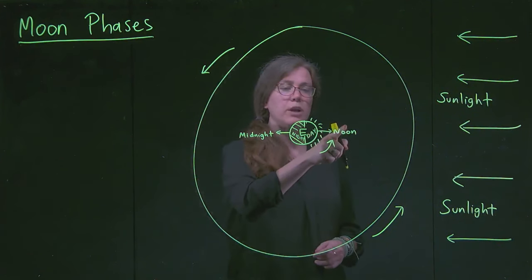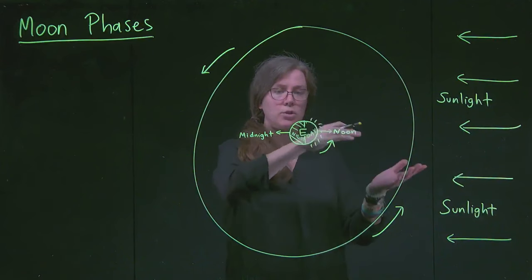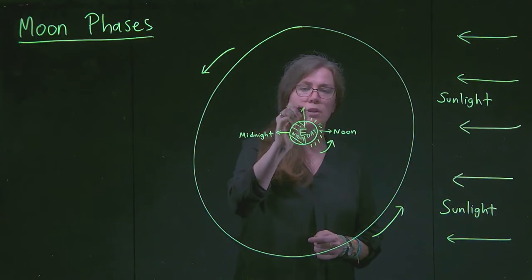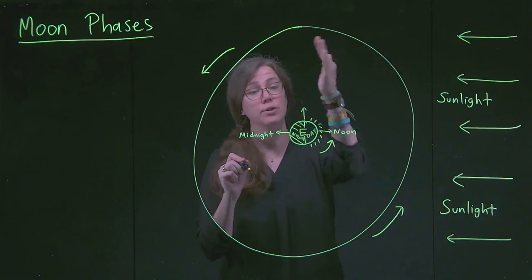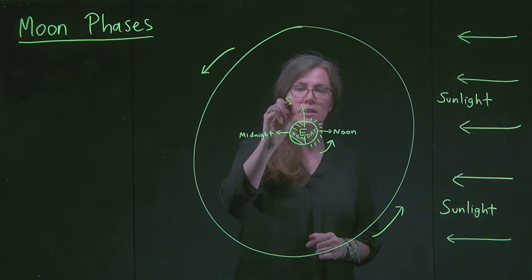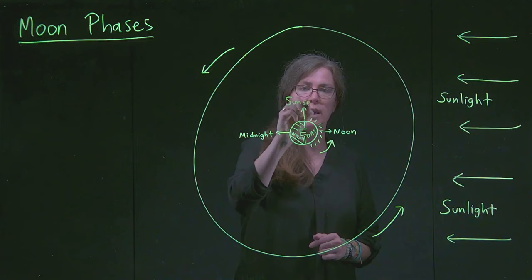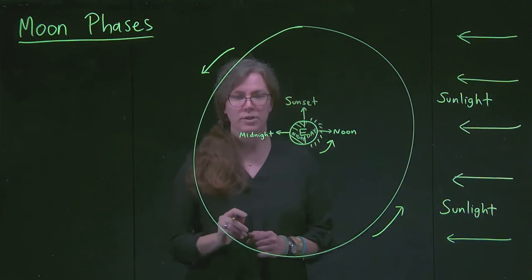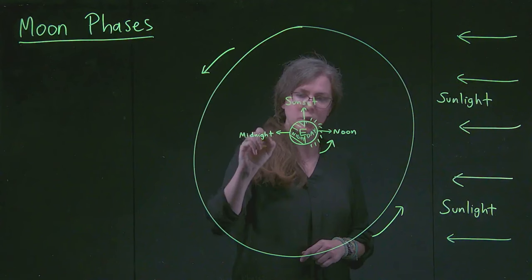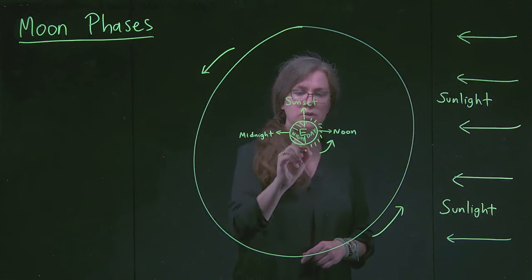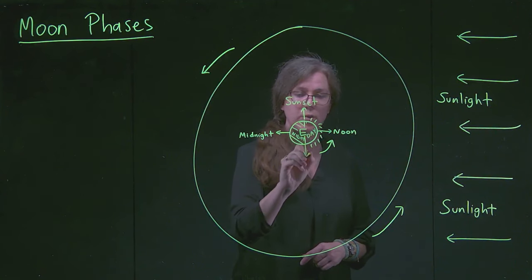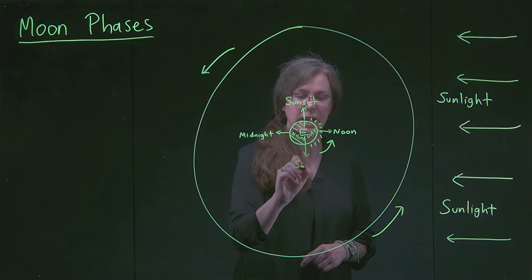What that means is if we are spending time after noon — so this person is rotating — if we're looking in this direction, it is after noon and before midnight, and we're going from day to night, so that is sunset. And if we continue past midnight towards noon, going from night to day, then if we were standing here looking, we'd be looking at sunrise.